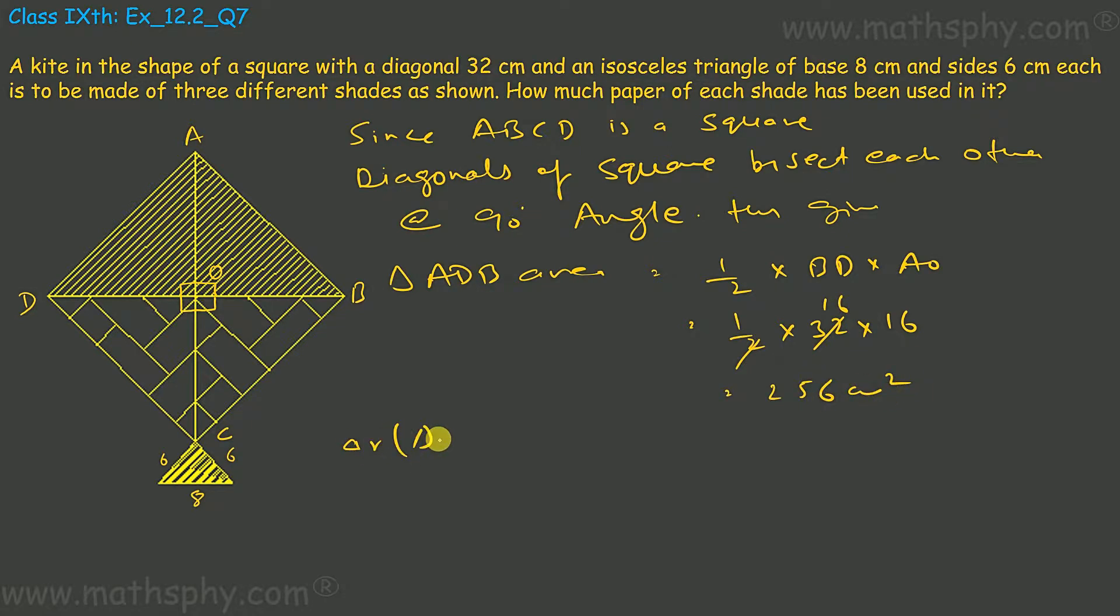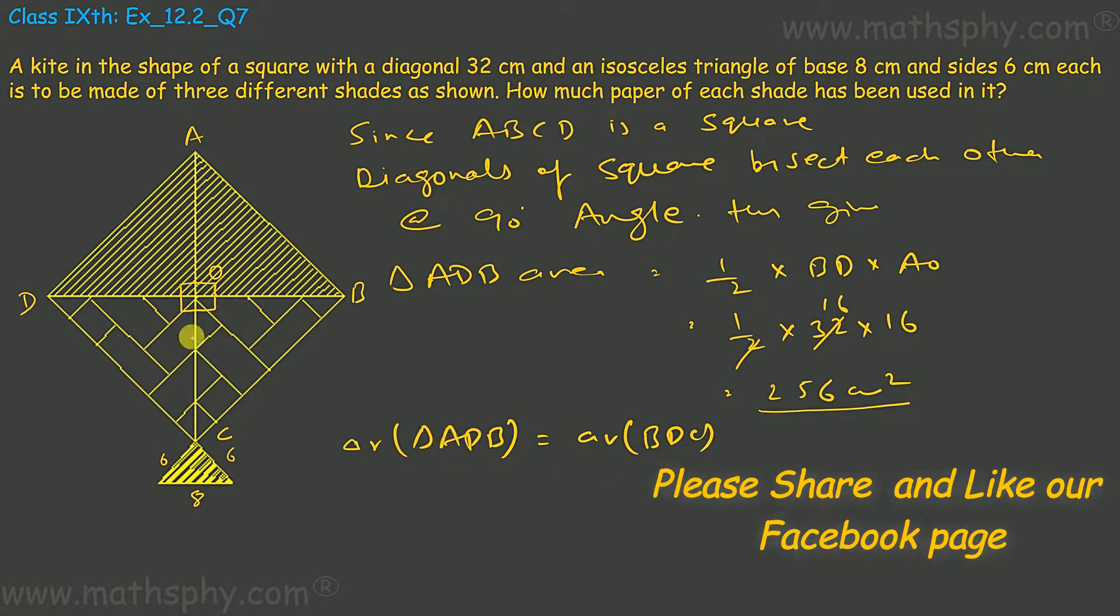Area of triangle ADB would be equal to area of triangle BDC. So this shade will have 256 cm square and this shade will also have 256, so this will be 256 cm square equals to area of BDC.